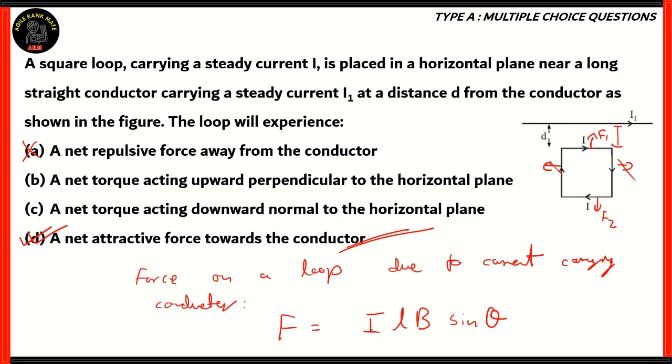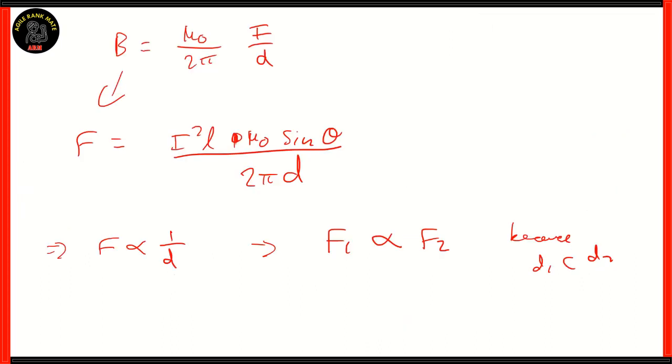Option A is incorrect because that is the opposite of what we've just found out. When we calculate torque using the right-hand thumb rule, it's clear that the torque goes parallel, it doesn't go perpendicular in either direction, so B and C are incorrect. The correct answer is option D, net attractive force towards the conductor.